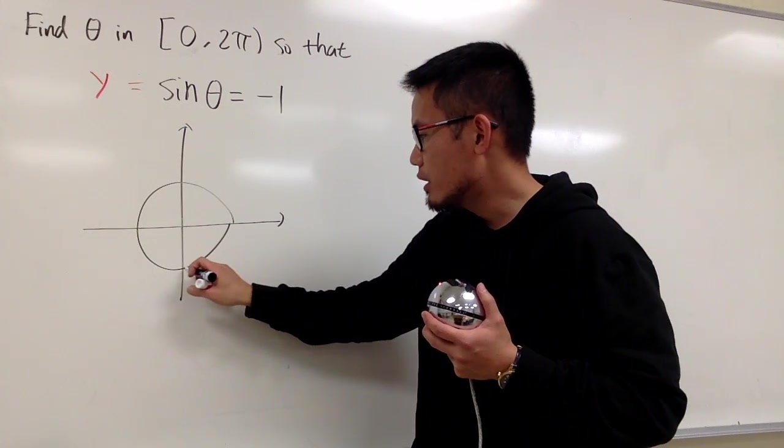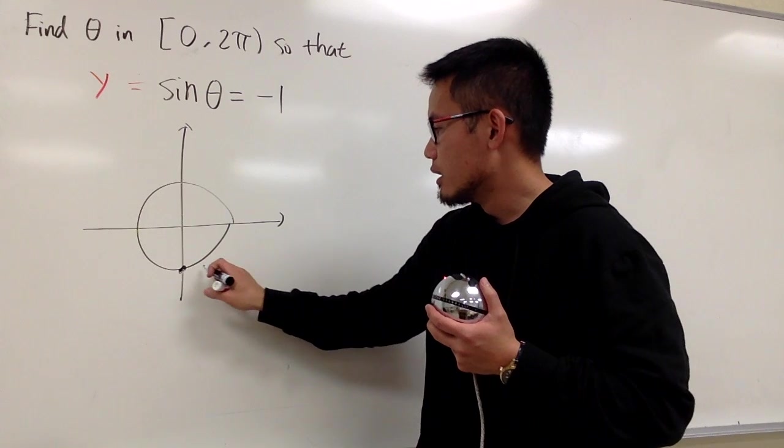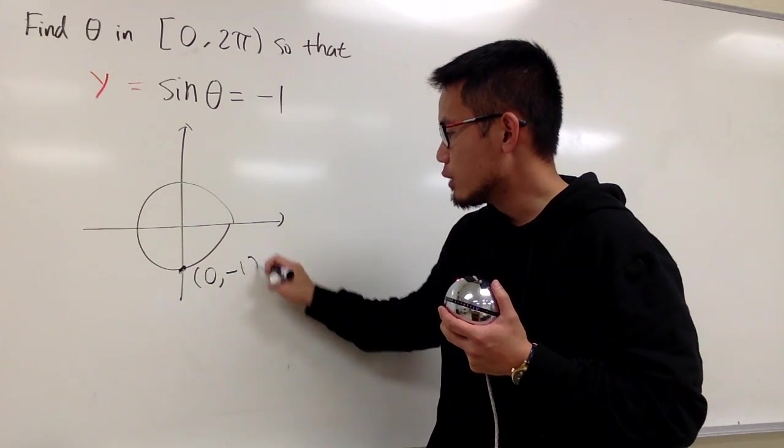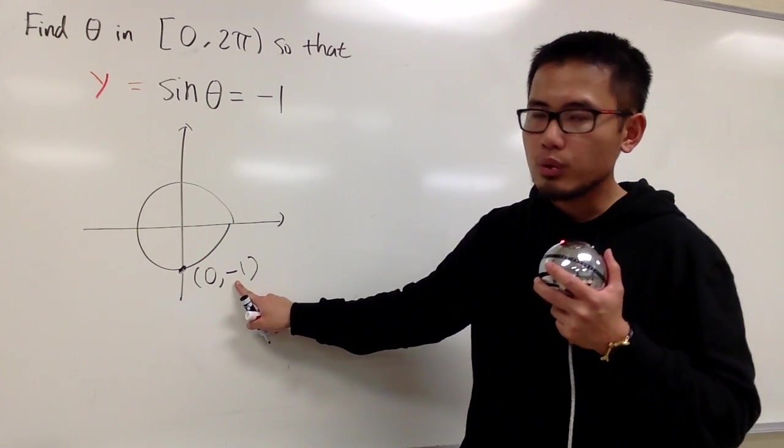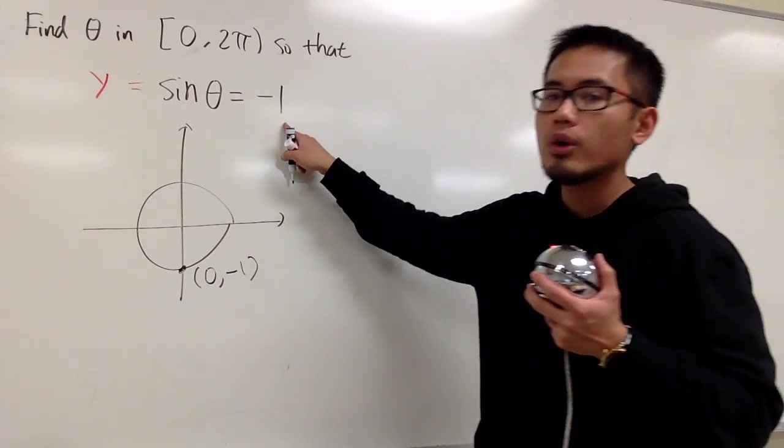Well, it's down below here, isn't it? This point has a coordinate 0, negative 1. That's the y value, that's sine theta is equal to negative 1.